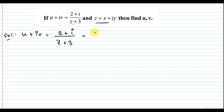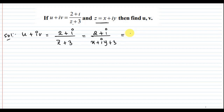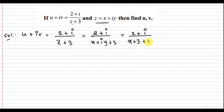So, u plus iv equals 2 plus i divided by z plus iy plus 3. That means we have to find the real part and the imaginary part. We have to rationalize the denominator. The rule for a complex number denominator is: we use the conjugate, which is x plus 3 plus iy.